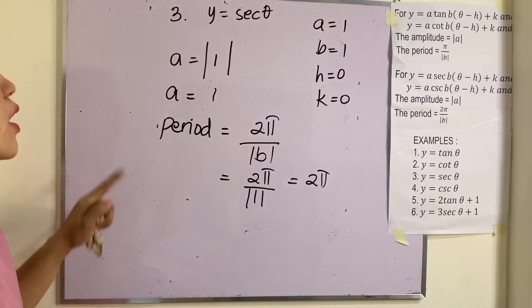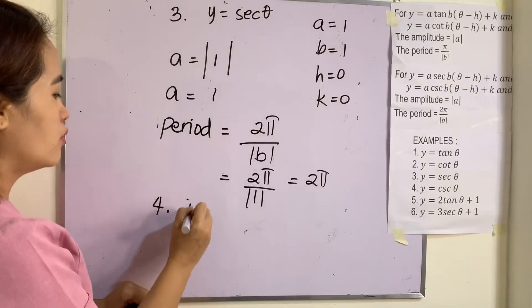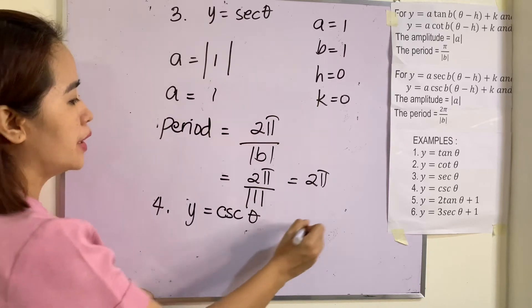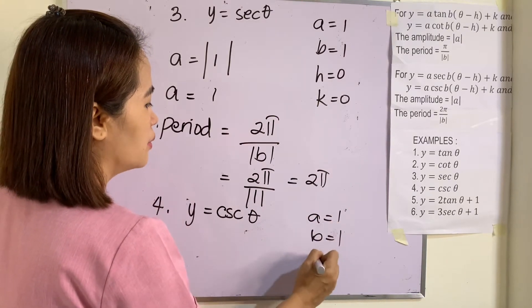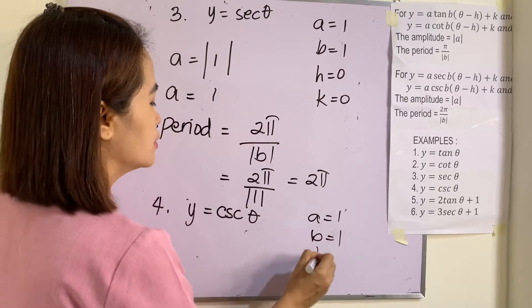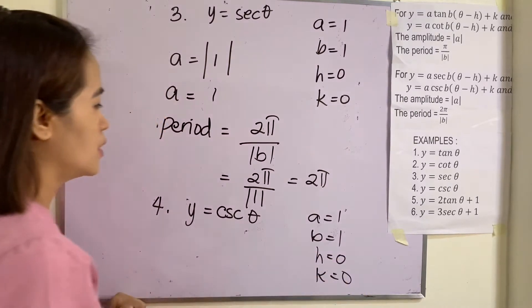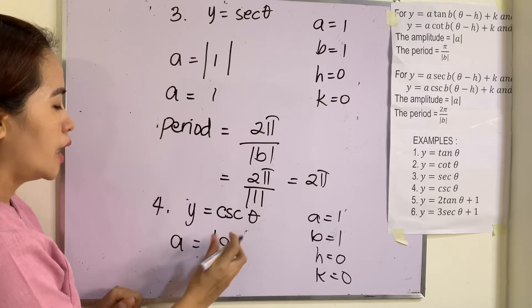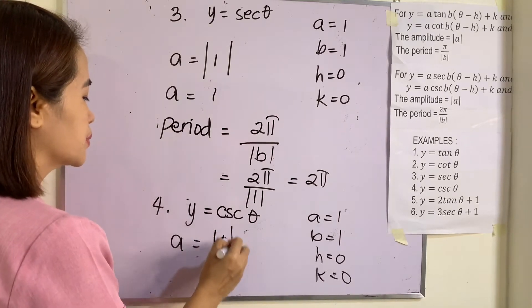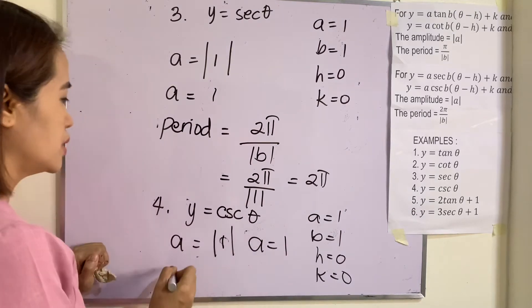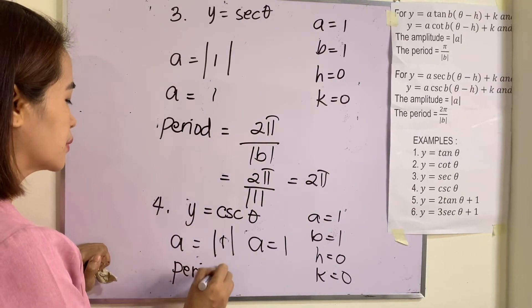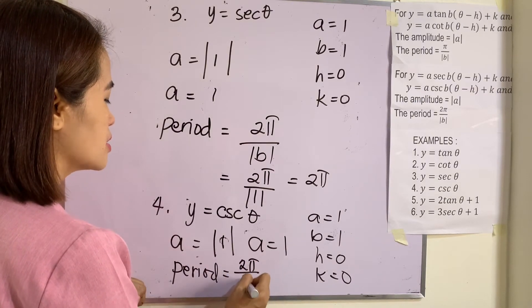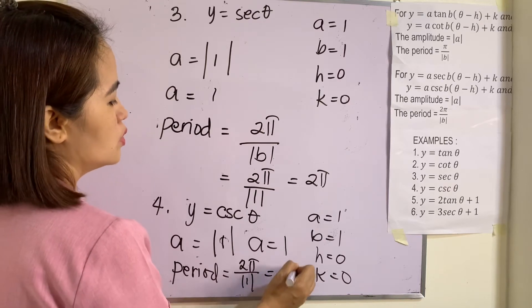Example 4: y = csc(θ). Here, a = 1, b = 1, h = 0, k = 0. The amplitude is |a| = 1, and the period is 2π/|b| = 2π/1 = 2π.